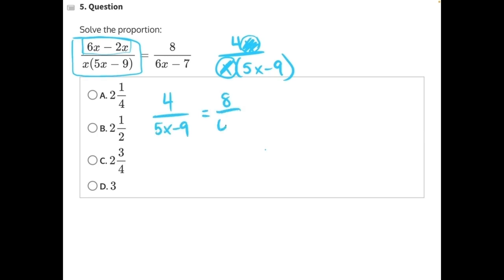We can begin to cross multiply. So we'll cross multiply 8 times 5x minus 9, and set that equal to 4 times 6x minus 7.